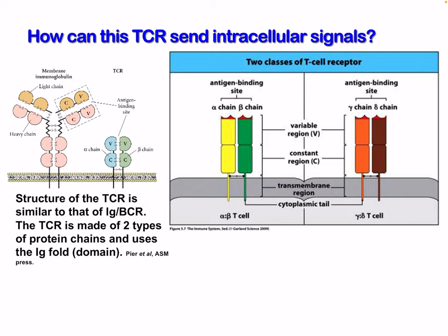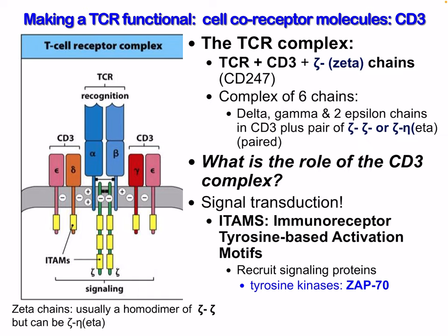The T cell receptor is made of two types of protein chains and uses the immunoglobulin fold domain, similar to the B cell receptor. We have alpha and beta chains, variable regions, constant regions, and disulfide bonds. All T cells contain something called CD3. The T cell receptor is a complex of six chains: delta, gamma, and two epsilon chains in CD3, plus a pair of Zeta-Zeta or Zeta-Eta chains. These are also called CD247.